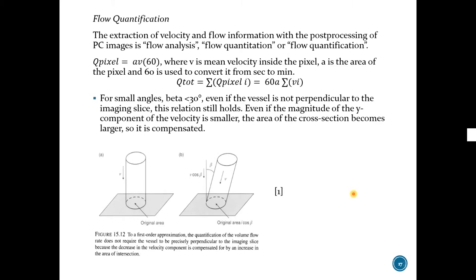I also want to mention flow quantification. It is a process of analyzing flow quantitatively. Q pixel is area times mean velocity. Sixty here is for conversion. And Q total is the sum of all Q pixels expressed like that. For small angles, beta smaller than 30 degrees, this can be estimated as a perpendicular vessel because the cross section area compensates the cos beta here.